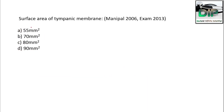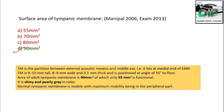The surface area of the tympanic membrane — options: A) 55 mm², B) 70 mm², C) 80 mm², D) 90 mm². The correct answer is 90 mm² total, but only 55 mm² is functional.